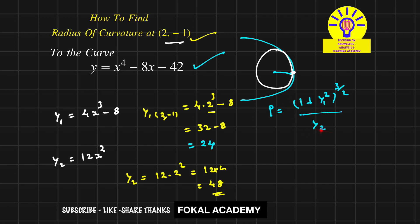Now we have y₁ and y₂. Substitute here and it becomes (1 + 24²)^(3/2) / 48. By using calculator, by simplifying this we will get radius of curvature ρ = 288.75.